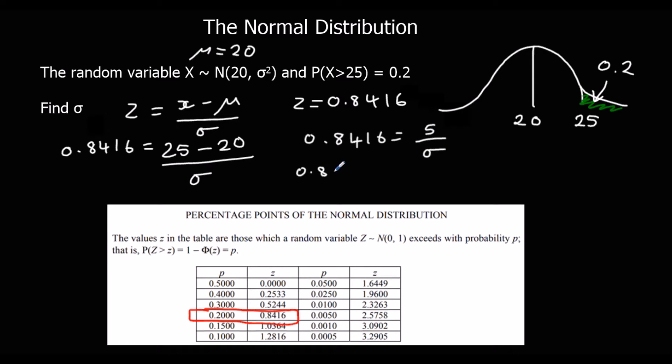So if we multiply by the standard deviation, multiply both sides by the standard deviation and divide by 0.8416, divide both sides by 0.8416, and we will get our standard deviation. So 5 divided by 0.8416 gives us a standard deviation to 3 significant figures of 5.94.